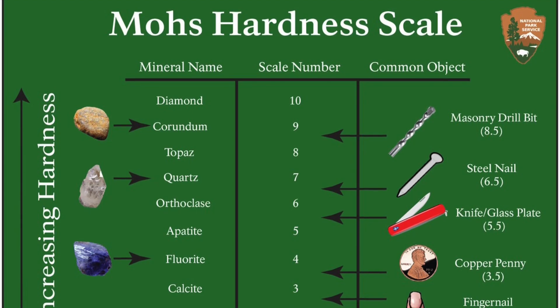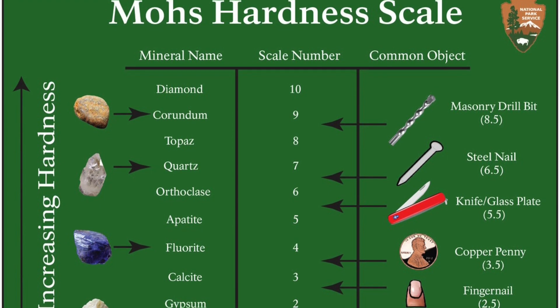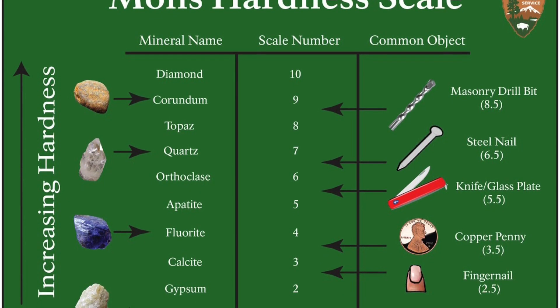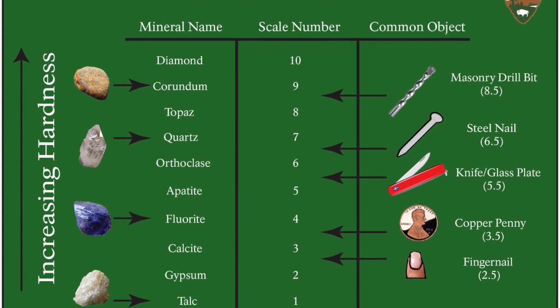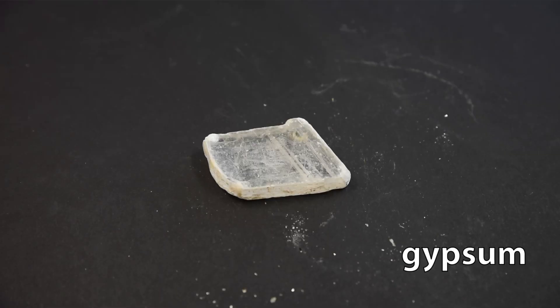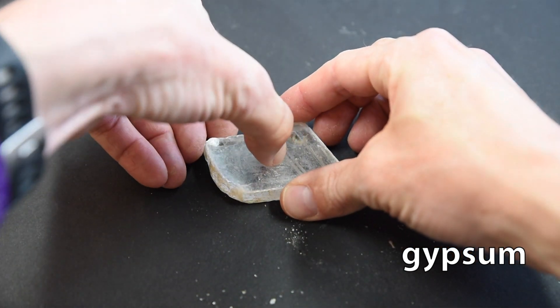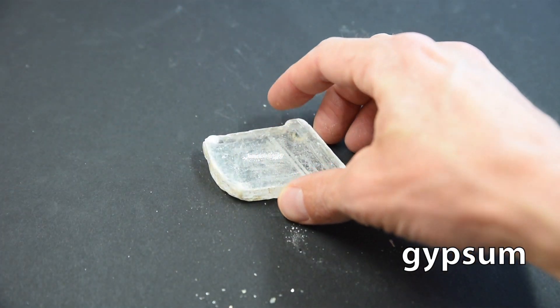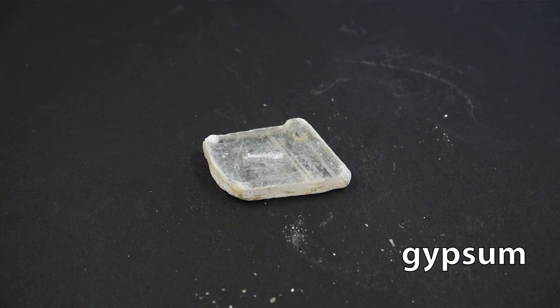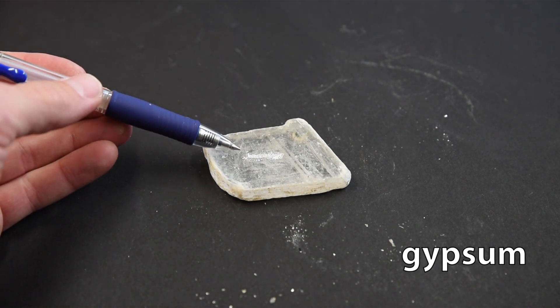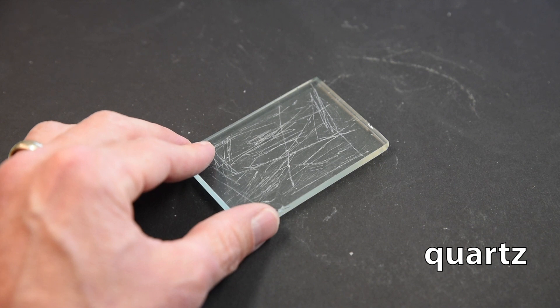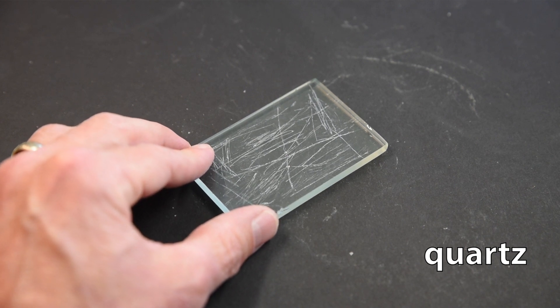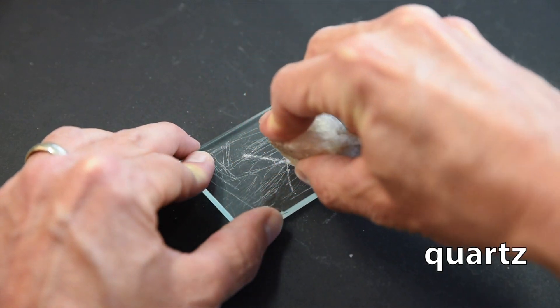Yet another mineral property is hardness — a qualitative measurement of what object or mineral scratches another. Hardness is measured with the Mohs hardness scale, with harder substances or minerals, ones that resist scratching, having higher values, and minerals that are easily scratched having low values on this scale. To test for the hardness of a mineral, try to scratch the mineral with an item of known hardness — harder objects will scratch less hard ones. For example, your fingernail has a hardness of about 2.5, and the mineral gypsum has a hardness of 2, so your fingernail will scratch the gypsum. Another example: quartz has a hardness of 7, and a glass plate a hardness of 5.5 to 6, so quartz scratches the glass.